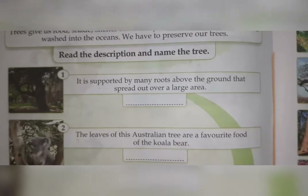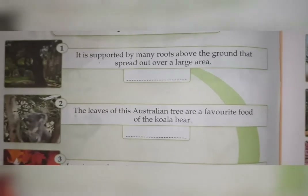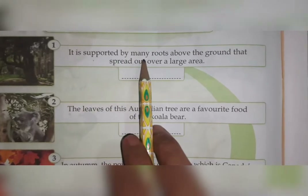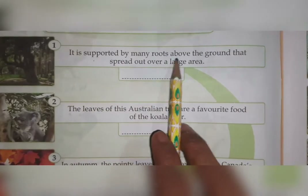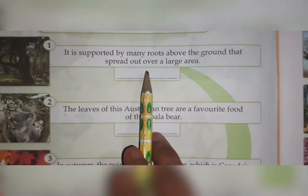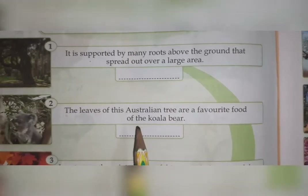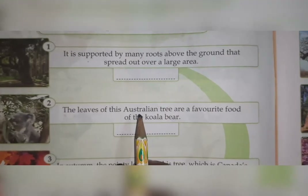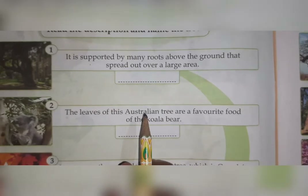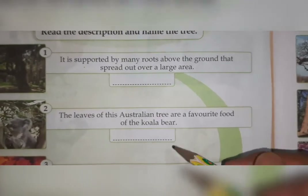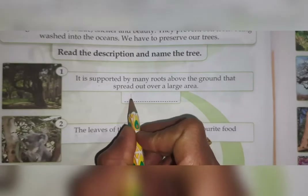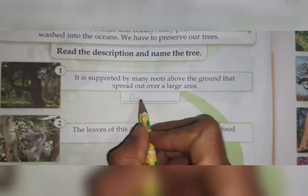Some clues we are going to read: 'It is supported by many roots above the ground that spread out over a large area.' So this is called which tree? It's a banyan tree. Write down B-A-N-Y-A-N, banyan.